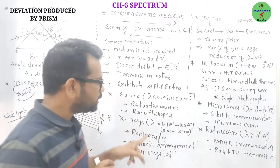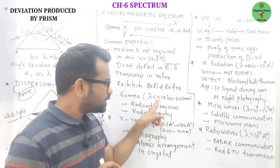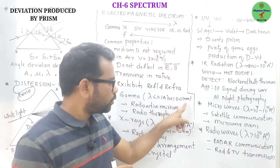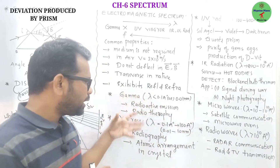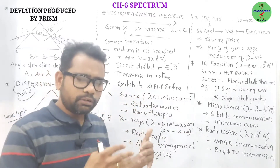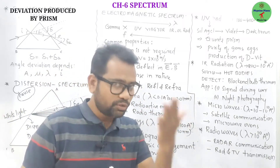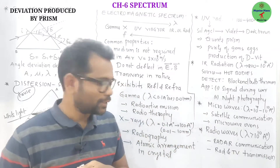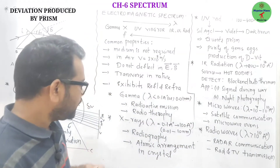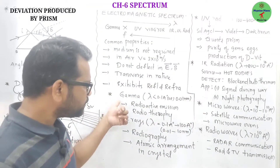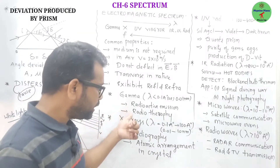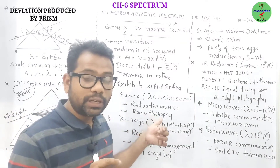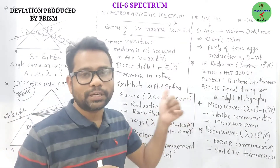Gamma radiation has a wavelength range of less than 0.1 angstrom or 0.01 nanometers. These gamma radiations are emitted during radioactive emissions, which we will learn about in radioactive decays. Gamma rays are very useful in radiotherapy to cure cancer, due to their high penetrating power.